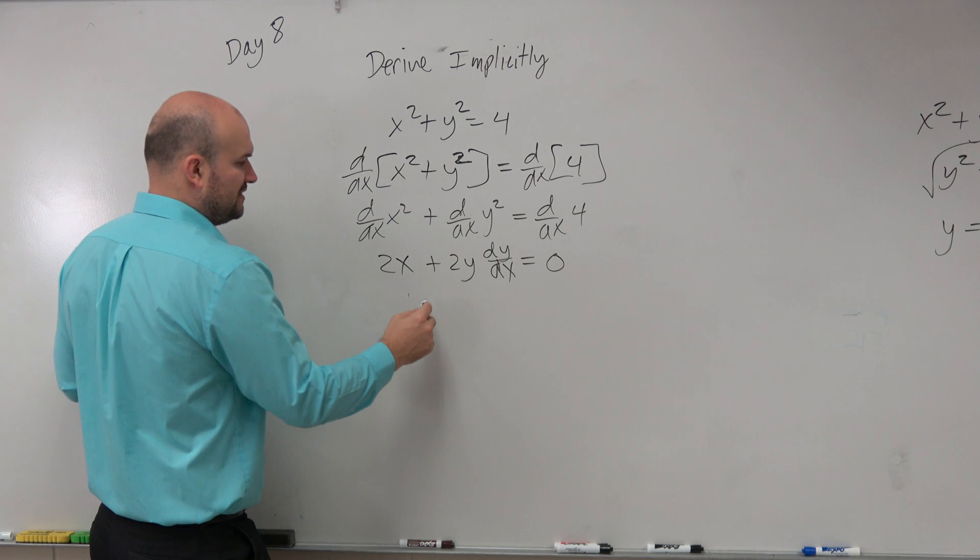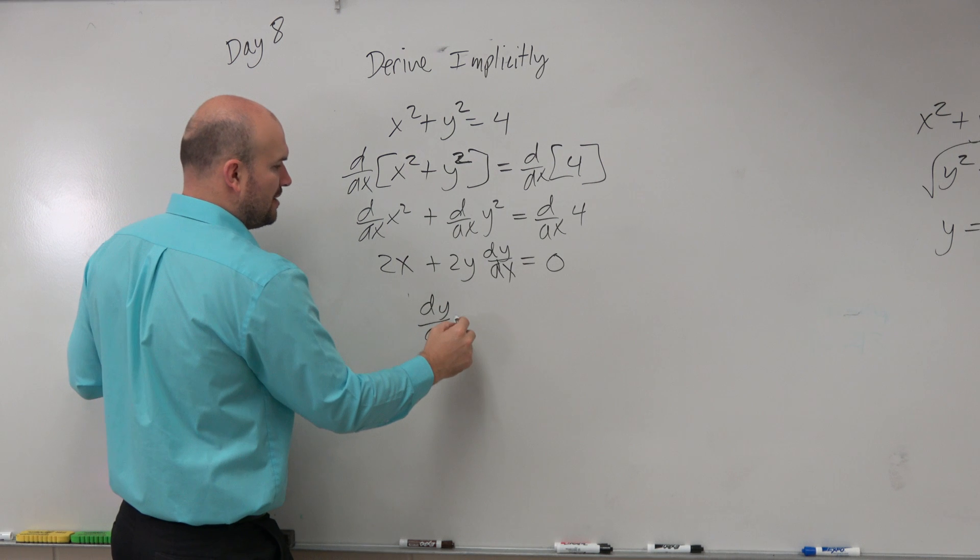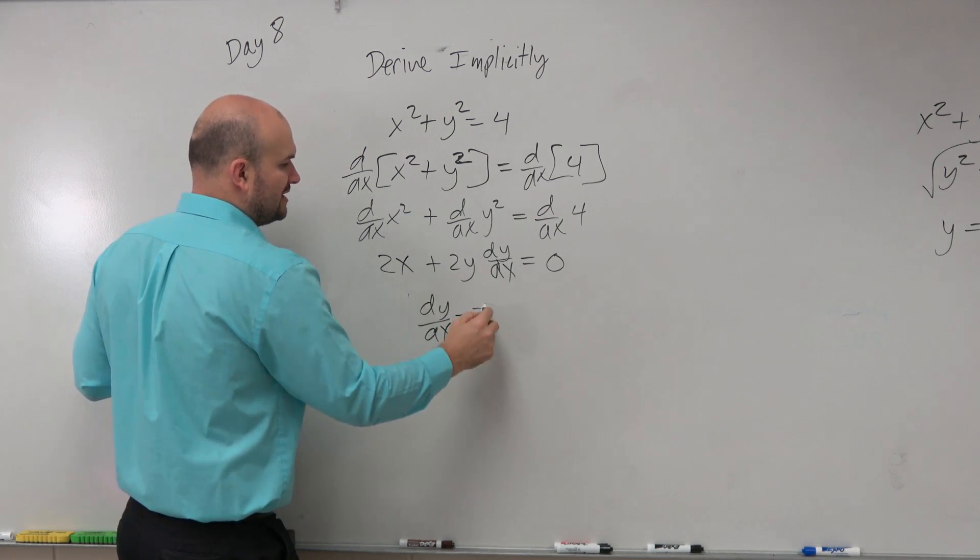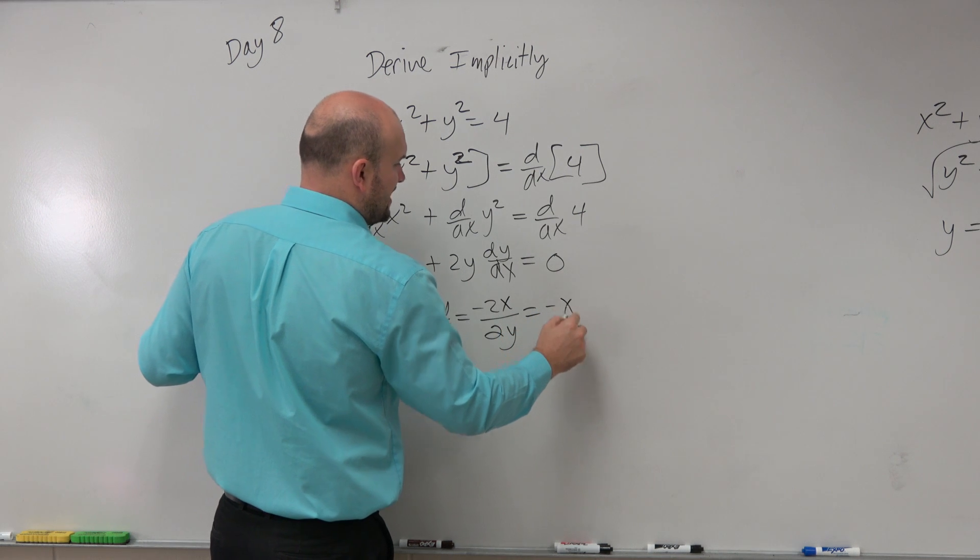So what we want to do is we want to solve for this. So to save myself a little bit of time, I'm going to subtract the 2x and then divide by 2y. So therefore, I'd get a negative 2x over 2y, which is negative x over y.